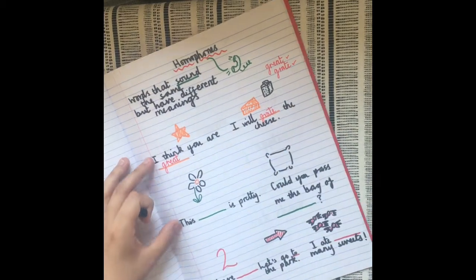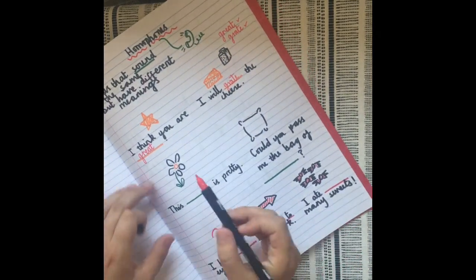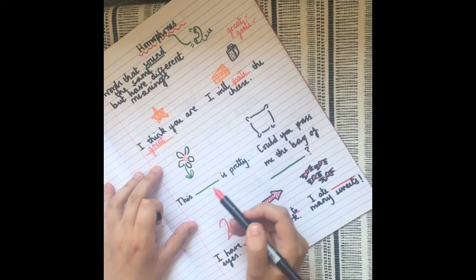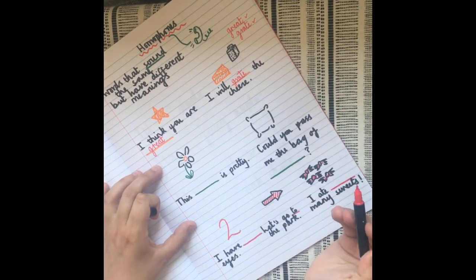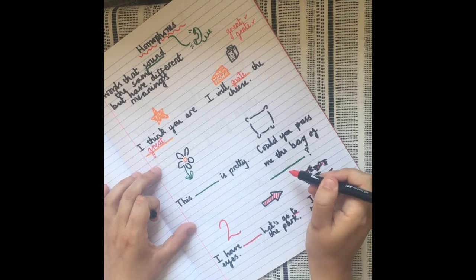Okay, let's go through another example. Right, so I know what this is. This is a flower. So 'This flower is pretty.' 'Could you pass me the bag of flour?'